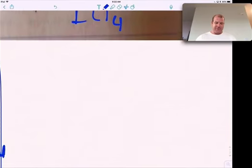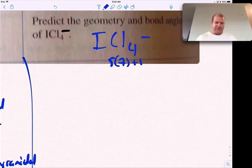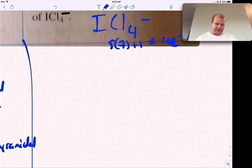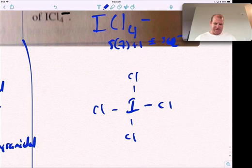Okay, same thing for ICl₄⁻, so iodine and chlorine, they all have seven, so this is five times seven, plus one for this minus one, and we get five times three, 36 electrons. So iodine in the center with the chlorines around.